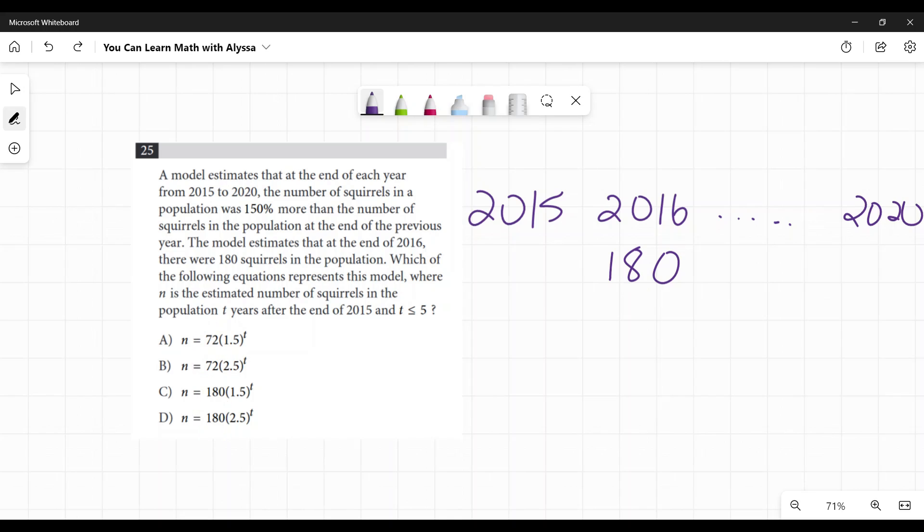When you have these exponential functions, that's what it is. The number that's the coefficient out there is the base number, the number you're starting with, the number of squirrels in this case that you're starting with. That 1.5 or 2.5 is going to be the increase per year, how much you're multiplying by to get the number of squirrels for the next year. And t is going to be the number of years.